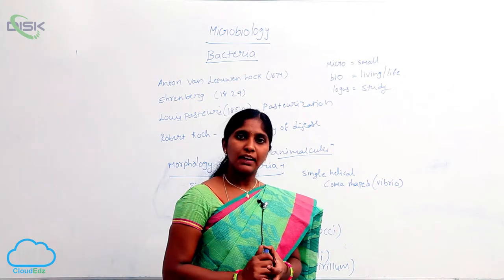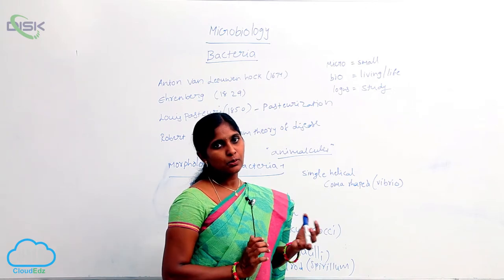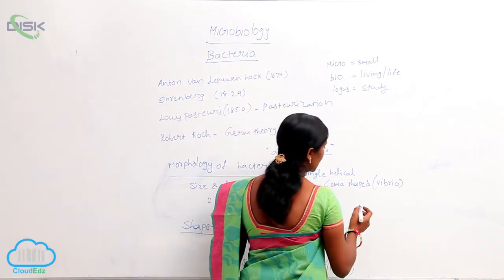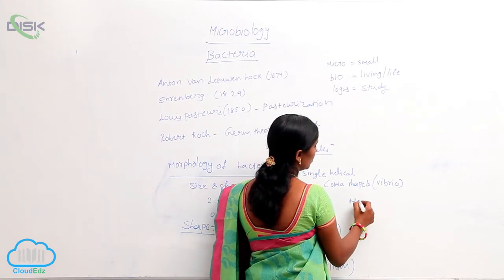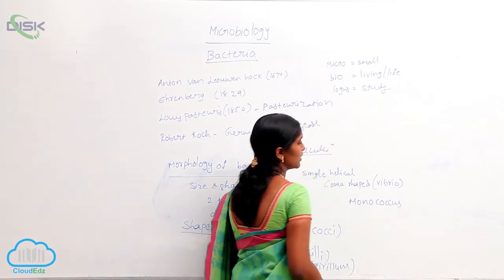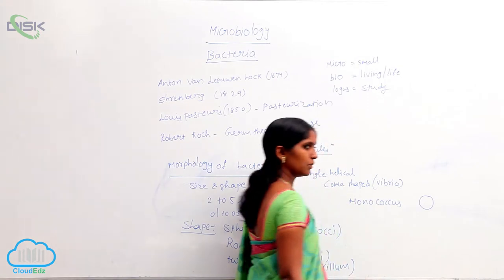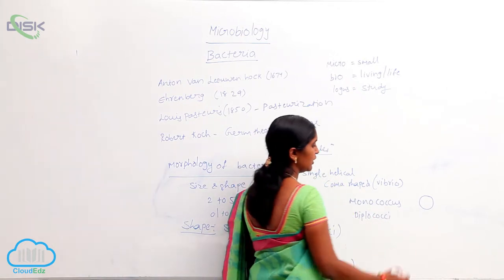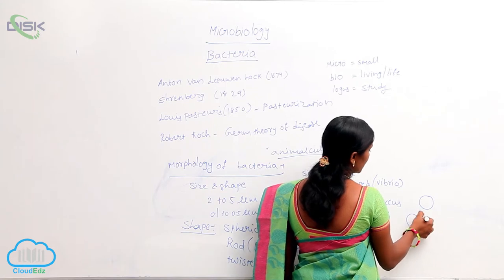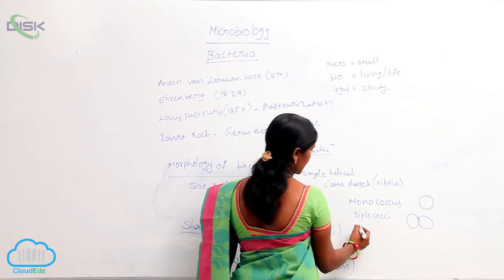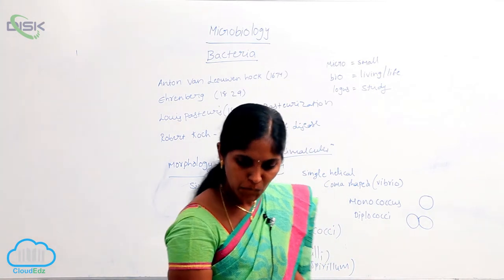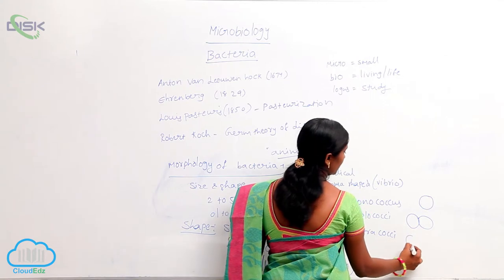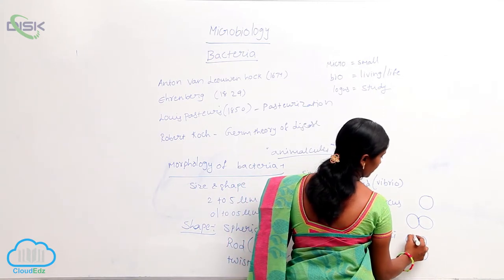Generally, bacteria live as isolated form or colonized form. When a single coccus is present, that is called monococcus — only a single bacterium living alone. Diplococcus means two bacteria bound to each other and living together. Tetracoccus has four cocci — one, two, three, four.